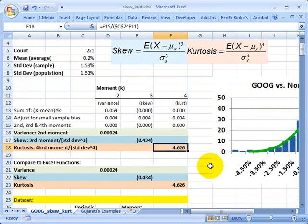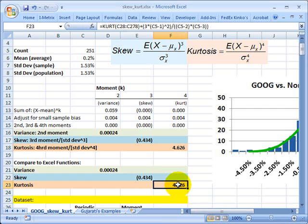And then just to compare, check those, I ran the Excel function. Of course, I could have shortcutted all this manual calculation, just ran straightly the skew function off those periodic returns, and you'll notice it matches. And the kurtosis,